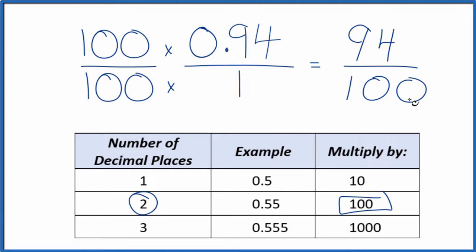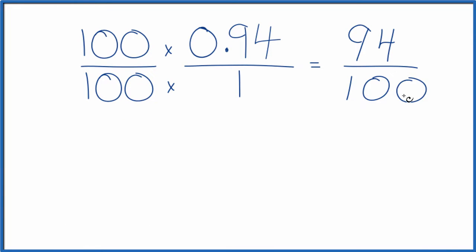And we have our fraction 94 over 100, but we can simplify this fraction. Since these are both even, let's divide 94 by 2 and 100 by 2. 94 divided by 2 is 47. 100 divided by 2, that's 50.